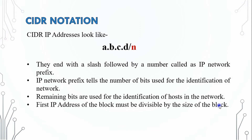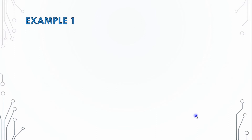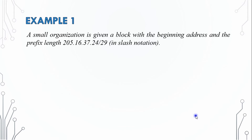The first IP address of the block must be divisible by the size of the block. This will be clear in the example. A small organization is given a block with beginning address and the prefix length is 205.16.37.24/29.